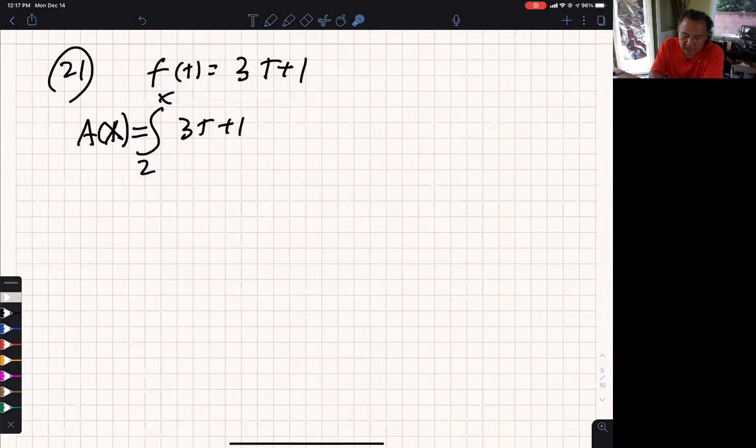Basically they want us to find this antiderivative, which is the net area called the area function. So how do you find this? It's with respect to t, so we put a dt. What's the antiderivative of that?